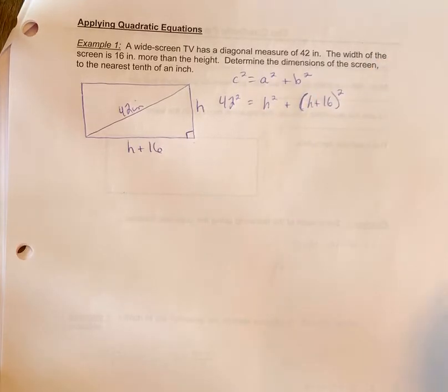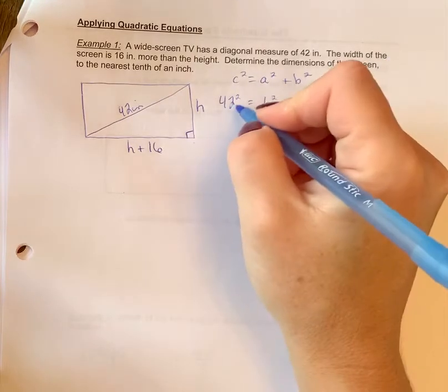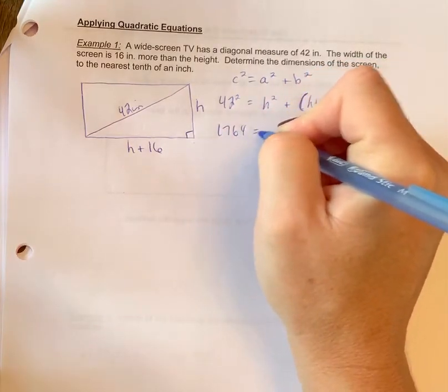Okay, this would be a calculator question, so if you need to grab your calculator, pause the video. All right, so 42 squared, you'd use your calculator, we'll give you 1764.